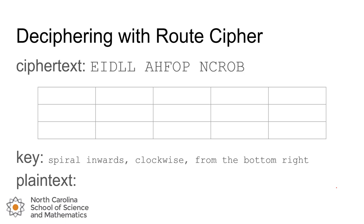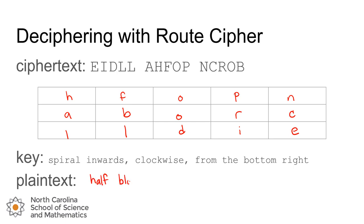To decipher using this system we're going to start by spiraling using the key and then we'll create the plain text by reading it off column by column left to right. So our key here says spiral inward clockwise starting from the bottom right. So the letter e will go on the bottom right and we'll move clockwise filling in the letters one by one. Once we fill the grid we can move left to right and realize that our plain text message is 'half blood prince' from Harry Potter.